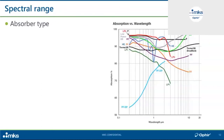Another consideration is the absorber type and spectral range. Different absorber materials absorb different wavelengths differently — some are broadband, some are not. Here you see graphs from Ophir's catalog showing all the different absorber types and their spectral curves. The actual numerical data behind these curves is available as Excel tables — feel free to ask if you need any of it.